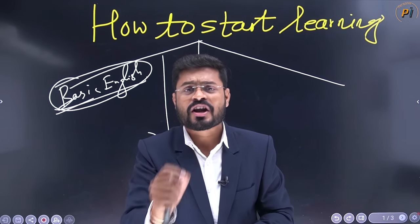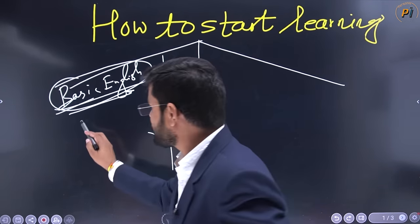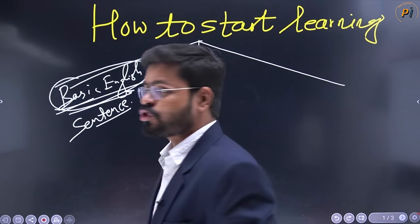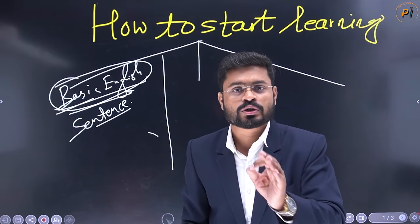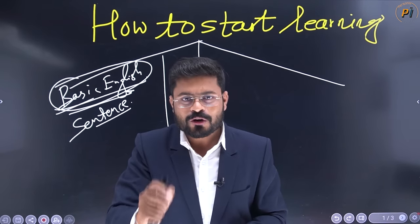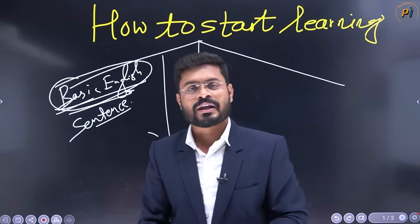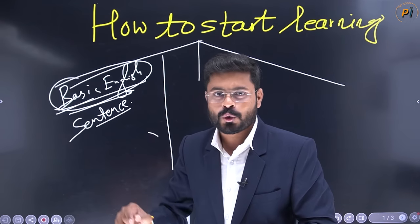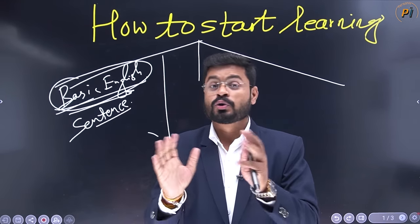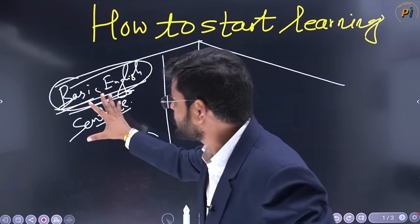If you don't know anything about English — the third category is for English grammar — they need to be clear about everything in language learning. The first focus is sentence-making: Interrogative, WH and Interrogative, Imperative, Optative, and Exclamatory sentences, which we need to develop.